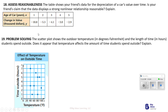Number 18 is for you to do. Number 19: the scatter plot shows the outdoor temperature in degrees Fahrenheit and the length of time in hours students spend outside. Does it appear that temperature affects the amount of time students spend outside? The colder it is, not too many people are outside. When it's about 40 degrees there are a couple, and at 60 degrees maybe one — it could be people sledding. When it gets to 65–90 degrees, the hotter it gets the more people seem to be outside.